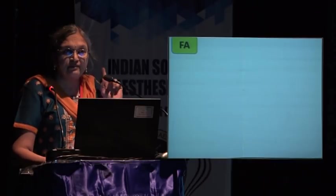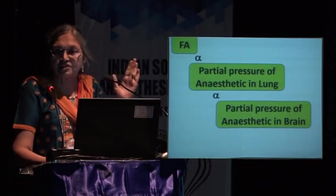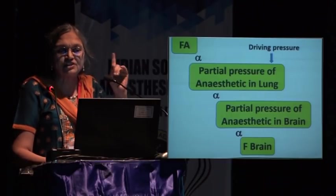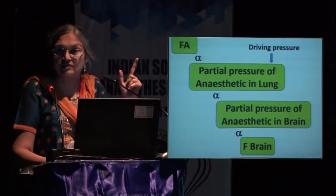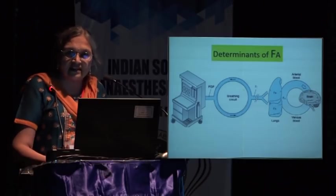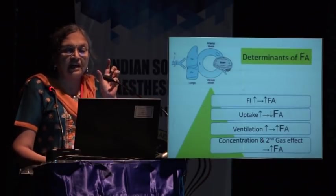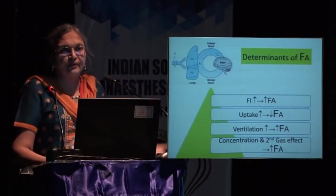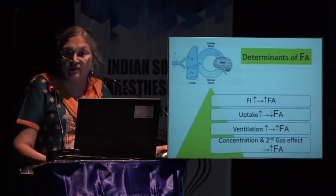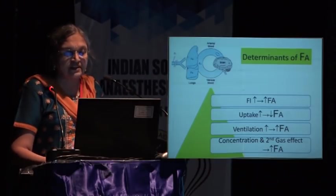Fractional alveolar concentration is proportional to partial pressure of anesthetic in the lung, which is proportional to partial pressure in the brain, which is proportional to fractional concentration in the brain. The partial pressure of anesthetic in the lung is the driving pressure. The factors determining alveolar concentration include: inspired concentration — increasing it increases alveolar concentration; uptake by the circulation — more uptake means slower rise; increasing ventilation produces faster rise; and the concentration and second gas effects.